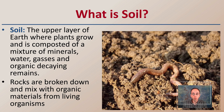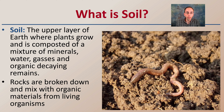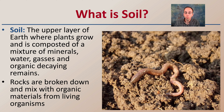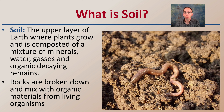First, I should define what soil basically is. It's the upper layer of the earth where plants grow, and is composed of a mixture of minerals, water, grasses, and organic decaying remains — rocks that are broken down and mixed with organic materials from living organisms. Here we can see an earthworm in the top of the soil.